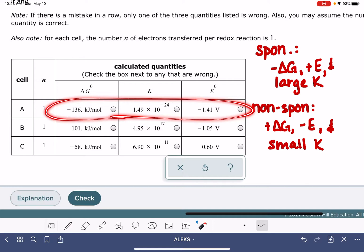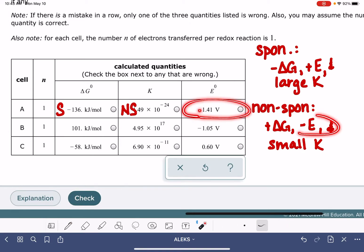So when we look at data set A, the value of G is a negative number, so that's consistent with it being spontaneous. The value of K is a very small number, so that's consistent with non-spontaneity. And the value of E is a negative number. That's non-spontaneous. So of these three numbers, this is the one that is inconsistent with the others.